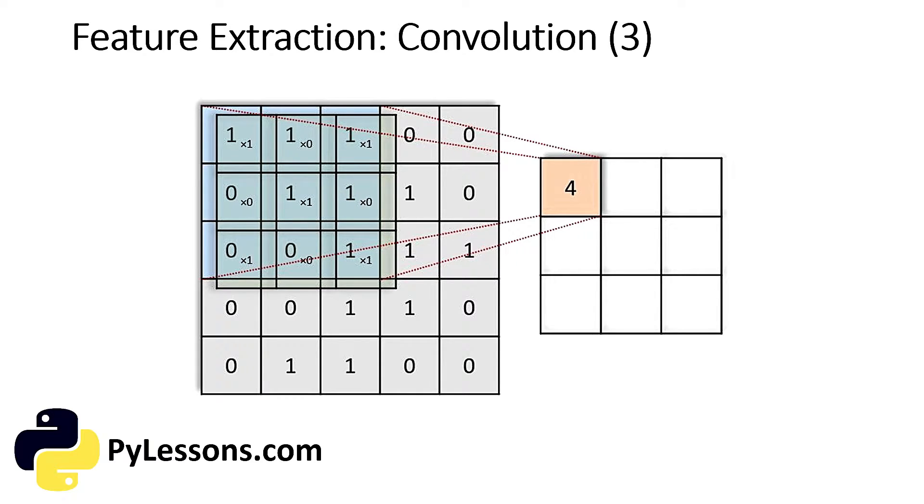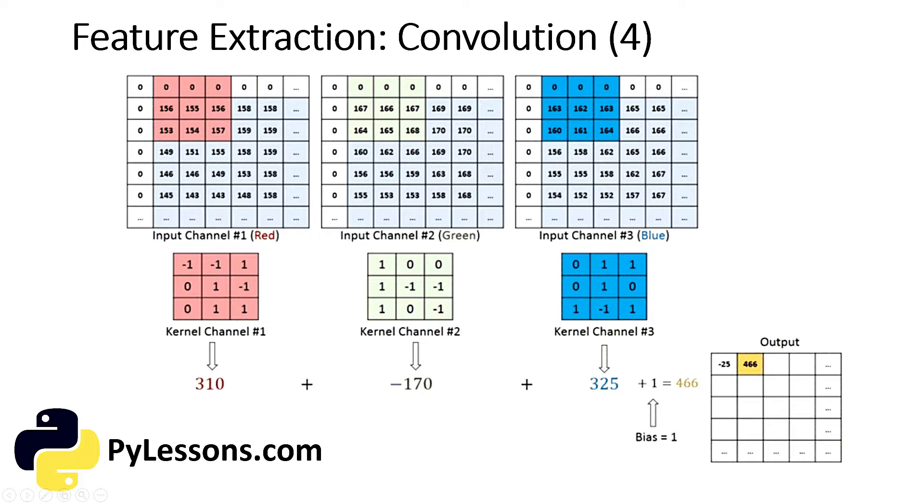In the case of images with multiple channels, for example here, the kernel has the same depth as that of the input image. Matrix multiplication is performed between all of these images and three different filters, and all the results are summed with the bias to give us a squashed one-depth-channel convolution feature output. We have one image with three channels, and what we receive as a result is also one image but now with one channel.